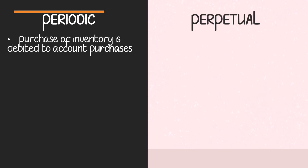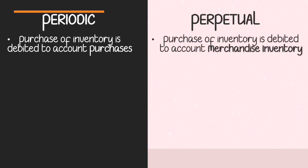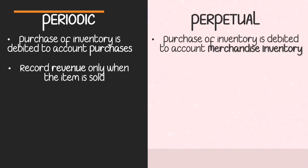To further understand, here is a comparison between the two systems. Under the periodic system, purchases of inventory are debited to the account 'Purchases.' Any purchase returns or discounts are recorded as purchase discount and purchase return. On the other hand, in the perpetual system, purchases of inventory are debited to 'Merchandise Inventory.' There is no purchases account — purchase returns and purchase discounts are recorded directly in the merchandise inventory account.